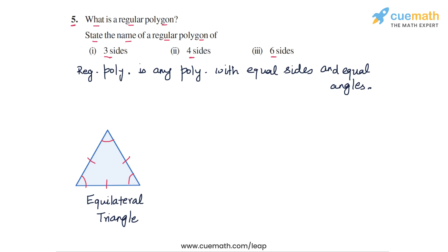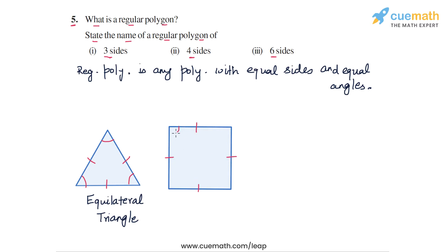Now a regular polygon of 4 sides will look like this. This will actually be a square, because a square has all 4 sides equal and all 4 angles of a square are also equal. All 4 angles are equal to 90 degrees.